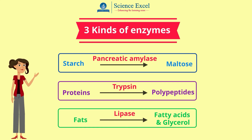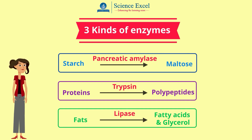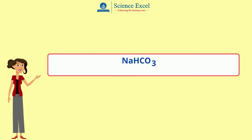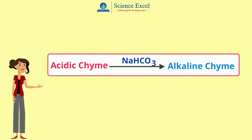These enzymes do not work well in acidic environments. Hence the partially acidic chyme which has come from the stomach needs further neutralization. The pancreatic juice containing sodium hydrogen carbonate helps to partially neutralize the acid in the chyme and provides an alkaline environment for the enzymes to work efficiently.